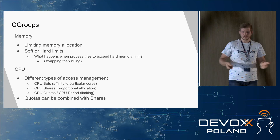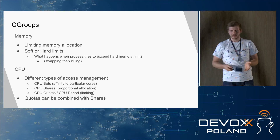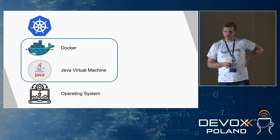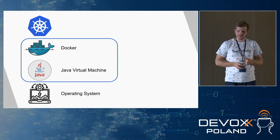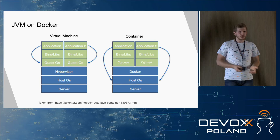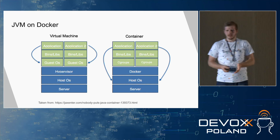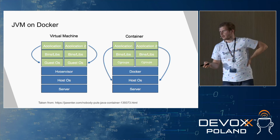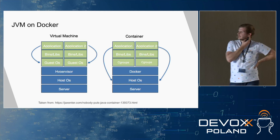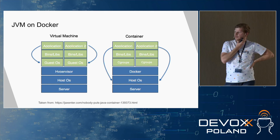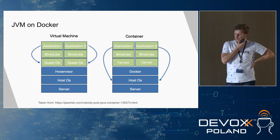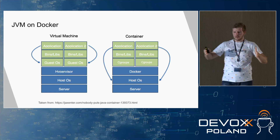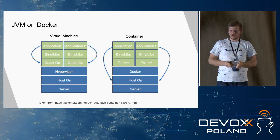Docker uses these techniques — memory limitation, CPU shares, and quotas. Now, how do Docker and JVM cooperate? There was a problem: when running JVM in a container, Java was checking available memory by asking the operating system directly, skipping cgroups. So cgroups would put a limit of, say, 4 GB, but on the node there were 64 GB. JVM thought it had 64 GB, so the initial heap size was one-fourth of 64 GB — much more than the limit. That was a problem until Java 8, and we say Java 8 was not container-aware.